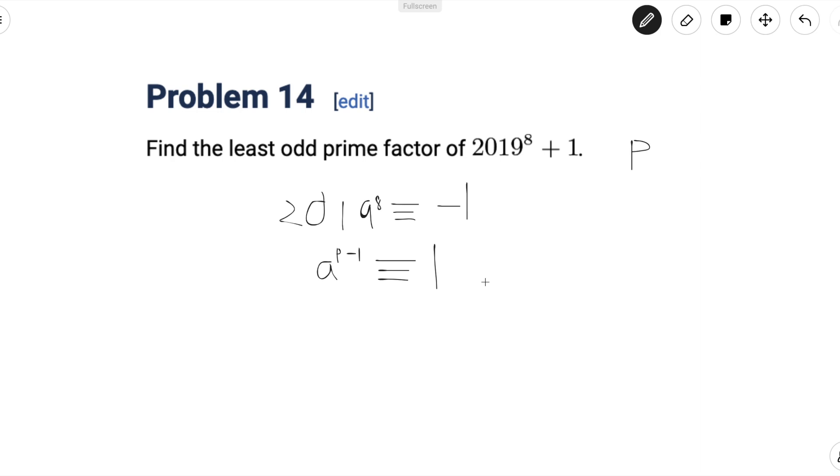The easiest way to do that is by squaring because negative 1 squared is congruent to 1 and 2019 to the 8 squared is equal to 2019 to the 16. So we get the equation 2019 to the 16 is congruent to 1. And now we can apply Fermat's Little Theorem.